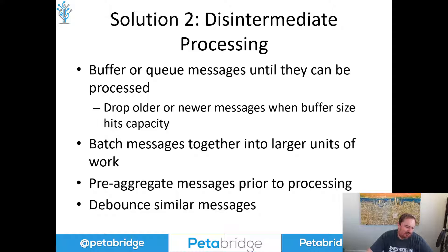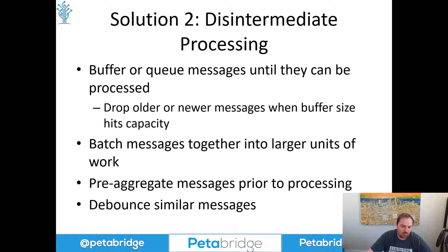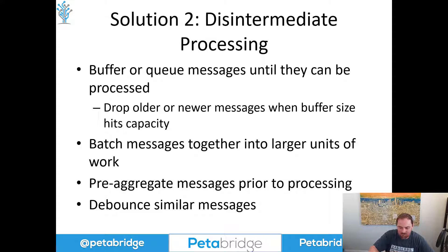Another technique we can use is debouncing — essentially where you detect many messages with similar or identical content and flatten them. Instead of having 30 events for something, you consolidate it down to a single event. Debouncing comes up a lot in user interface-driven applications where you might get a ton of events from the mouse when someone's dragging their cursor over the screen. Rather than processing thousands of mouse events, you might just need to know its position 30 milliseconds ago versus where it is now, and automatically perform a translation. That's an example of debouncing.